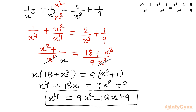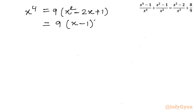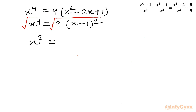This is a quartic equation and we need to find four solutions. Taking 9 as a common factor on the right hand side gives x⁴ = 9(x² minus 2x + 1), which is a perfect square: x⁴ = 9(x minus 1)². Taking square roots of both sides: x² = ±3(x minus 1).